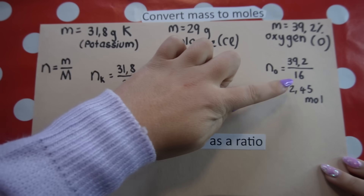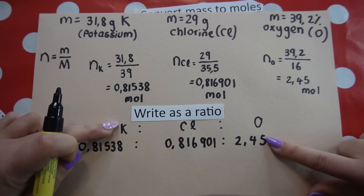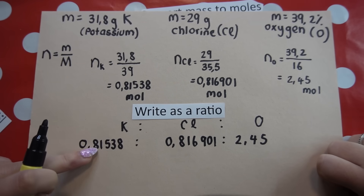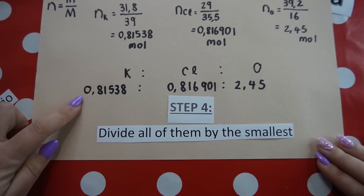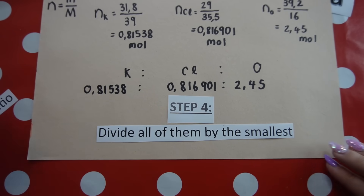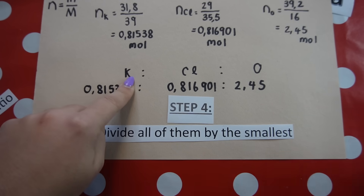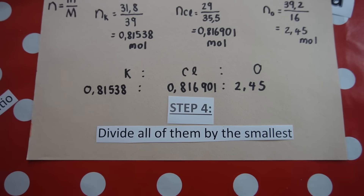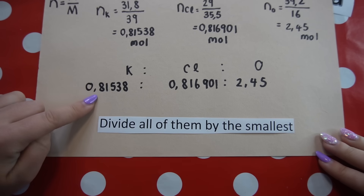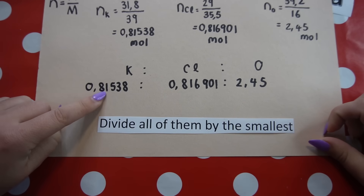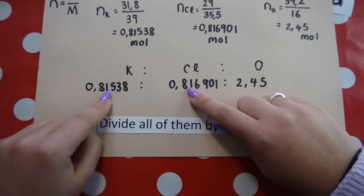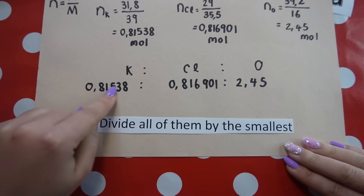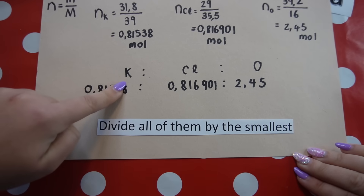Step three: write the moles as a ratio — potassium to chlorine to oxygen — using the values just calculated. Step four: divide all values by the smallest to simplify the ratio into whole numbers, since empirical and molecular formulas use whole number subscripts. Looking at the three values, 0.815 is the smallest.